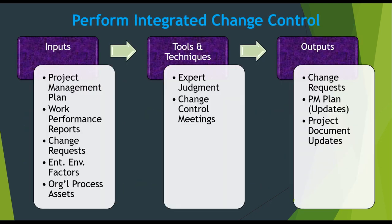Perform integrated change control — inputs are: project management plan, work performance report, change requests, enterprise environmental factors, organizational process assets. Tools and techniques are expert judgment and change control meetings. Outputs are change requests, project management plan updates, and project document updates.